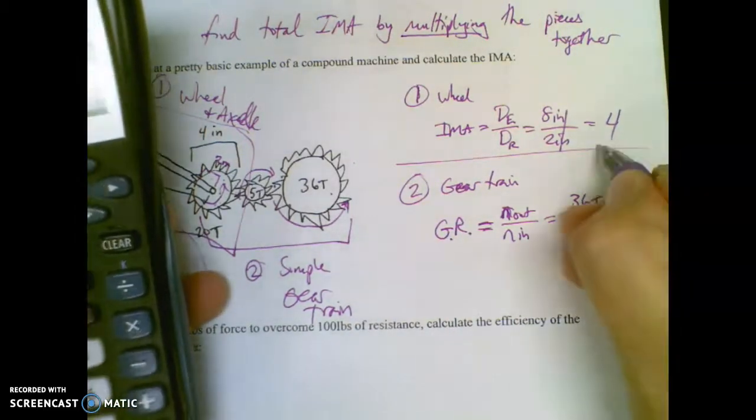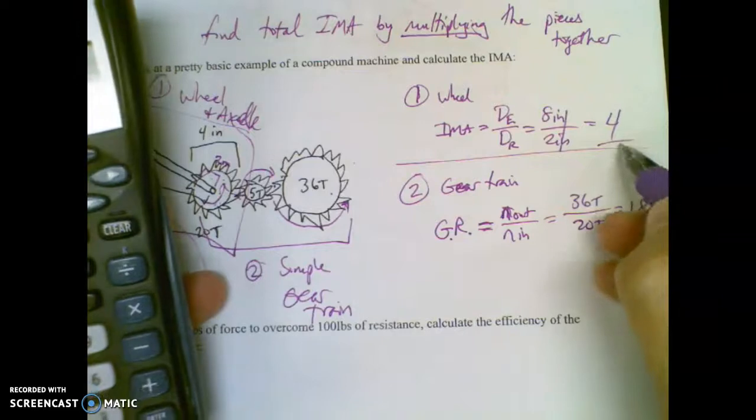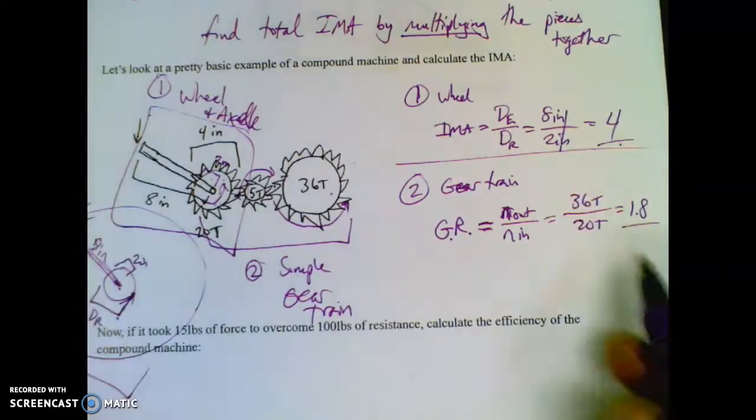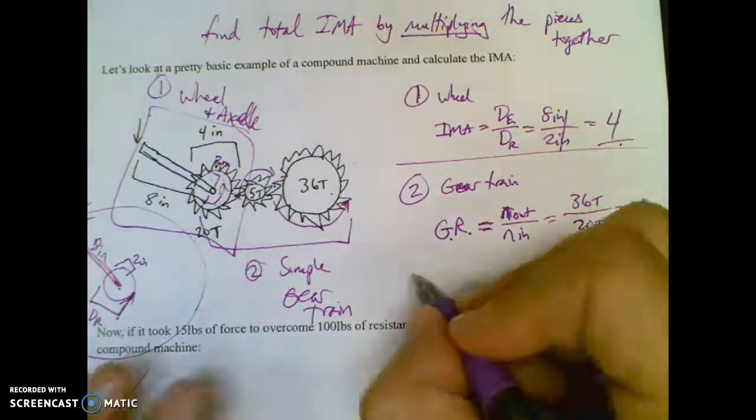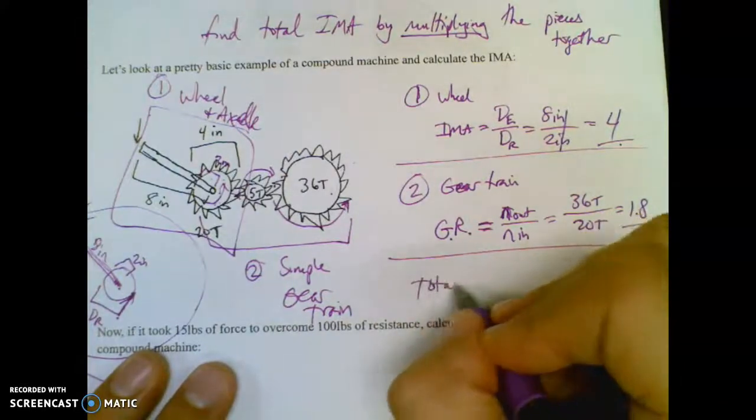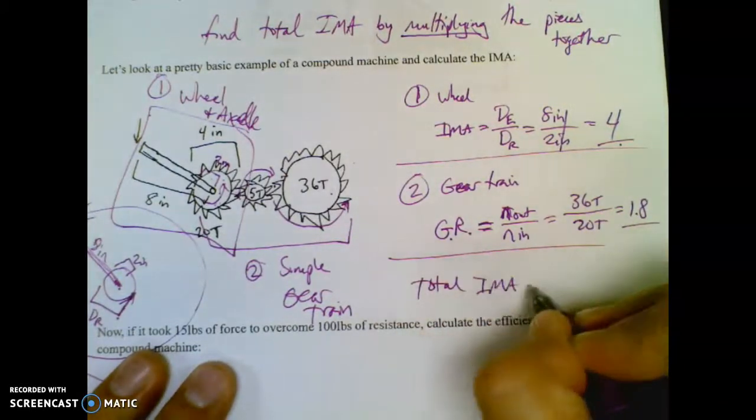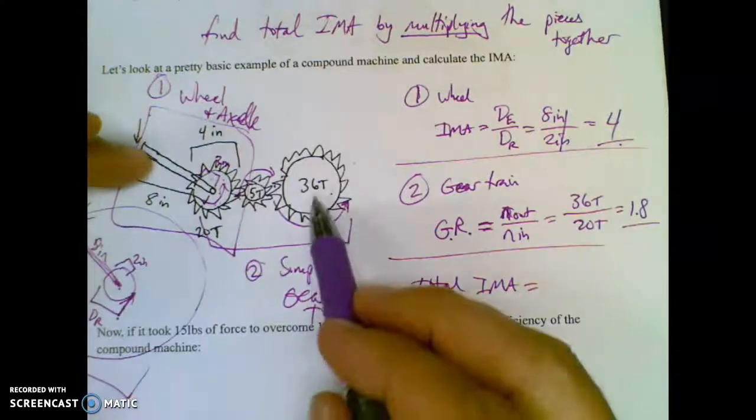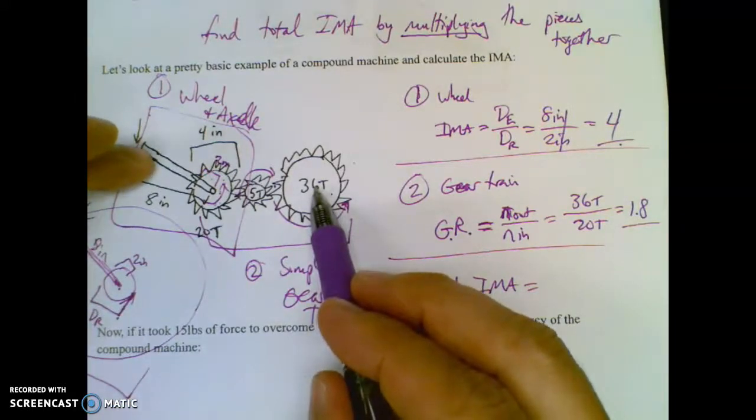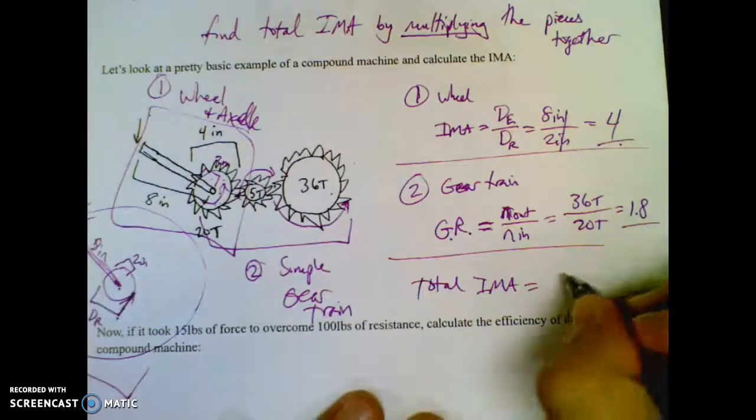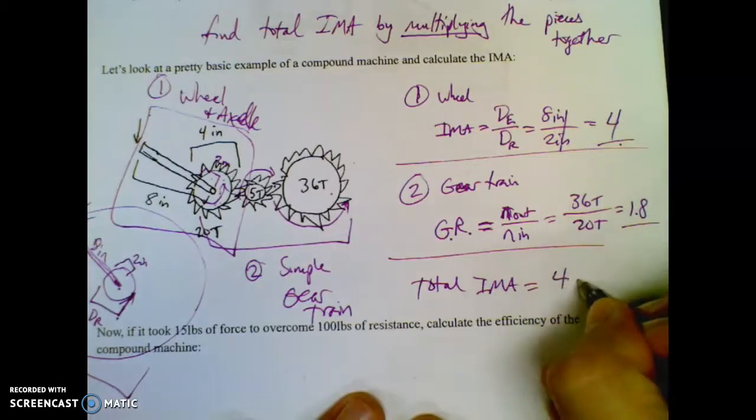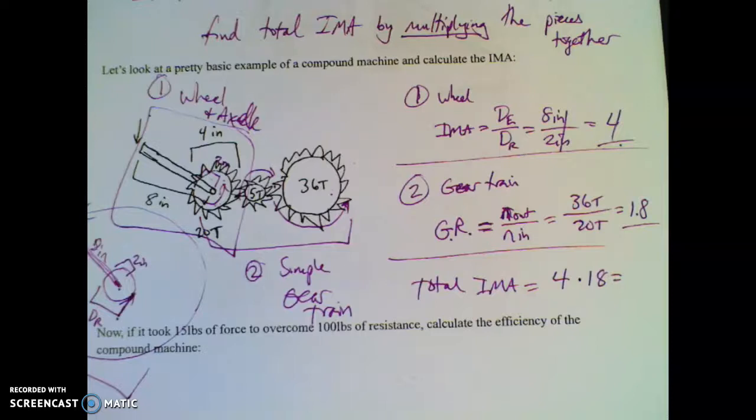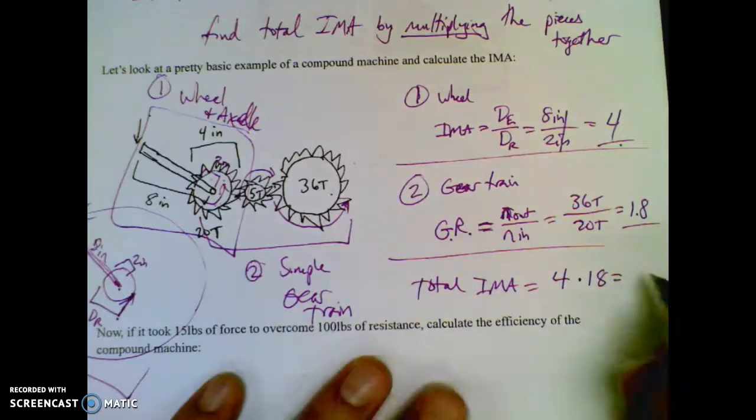So the gear ratio or mechanical advantage here is four. Mechanical advantage, also known as gear ratio, is 1.8. So your total IMA of the whole machine, if I cranked this compared to the mechanical advantage I have over here, how difficult it is to turn, I have made a mechanical advantage of 4 times 1.8, which is a mechanical advantage of 7.2.